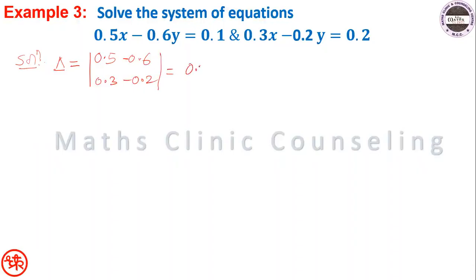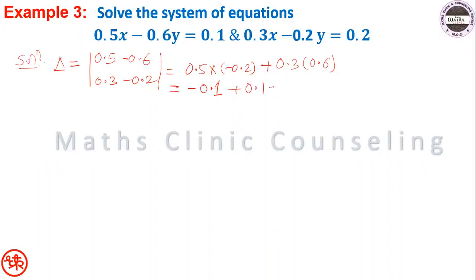Delta equals 0.5·(-0.2) minus (-0.6)·0.3, which is minus 0.10 plus 0.18, equal to 0.08. Therefore delta equals 0.08.